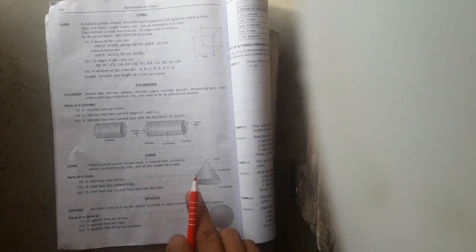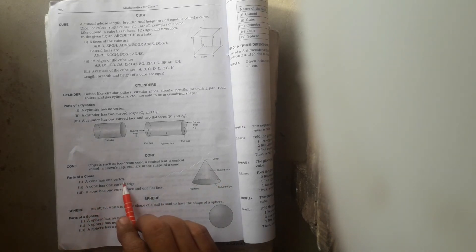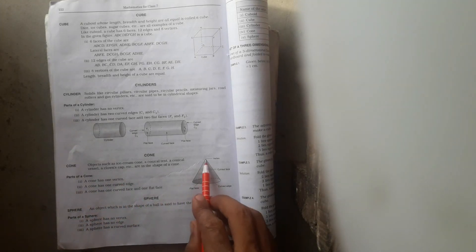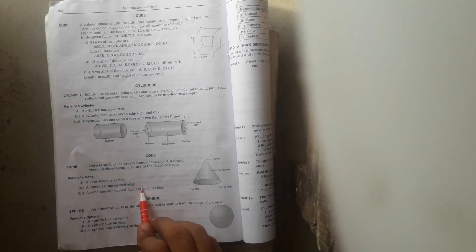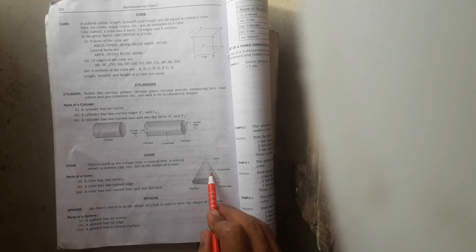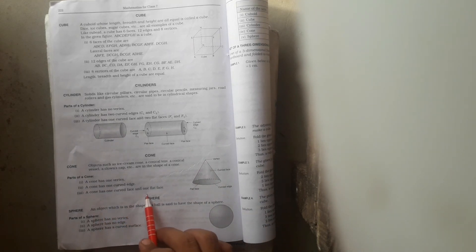This is the figure of cone. A cone has one curved edge. See this here, this is the curved edge. A cone has one curved edge and one flat face. Clear students?